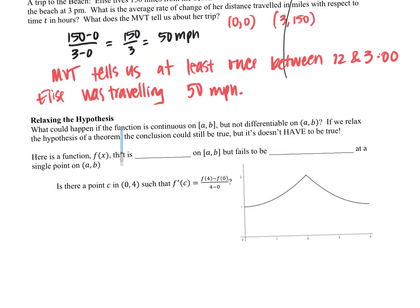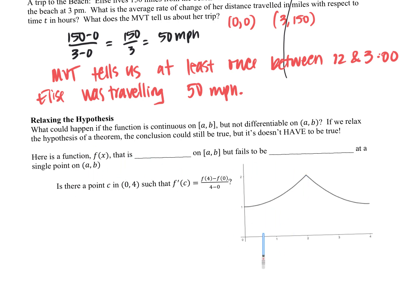What could happen if the function is continuous but not differentiable? Do you agree this one's continuous but not differentiable? Do you agree we've got a cusp or corner here? So the mean value theorem could still apply, but it doesn't have to. Would you agree this function is continuous but not differentiable?